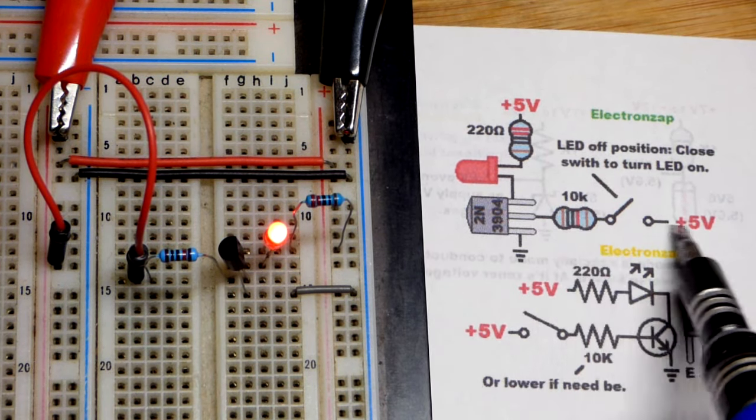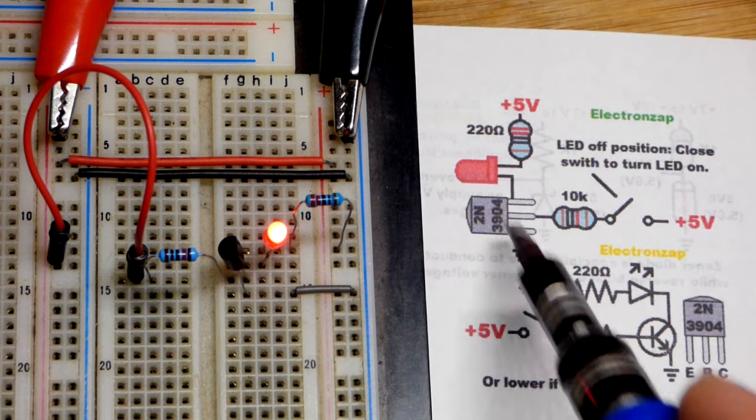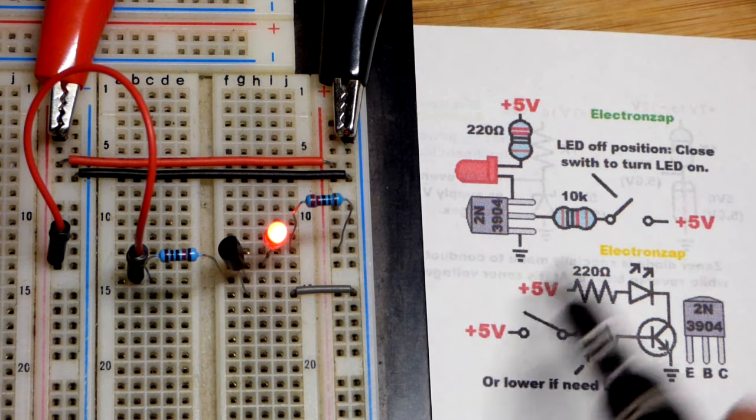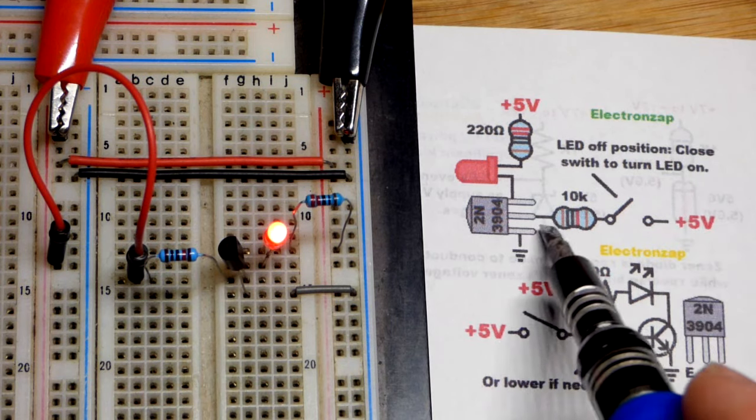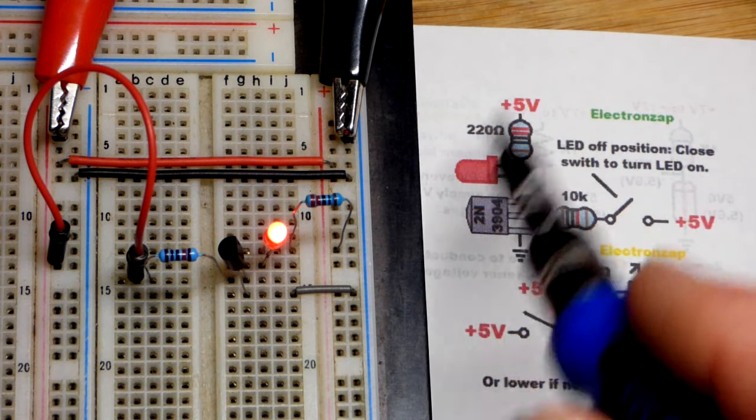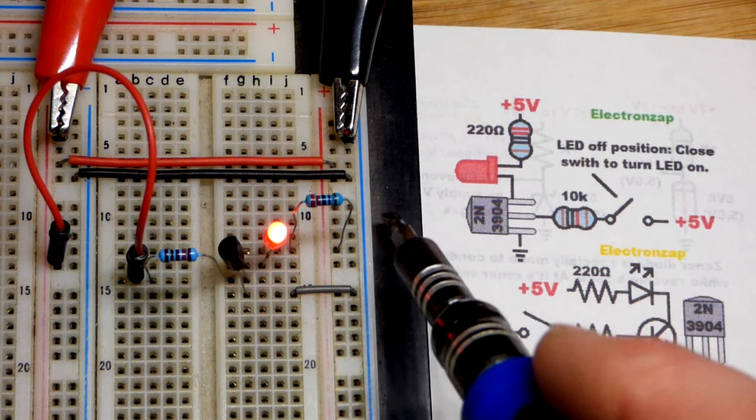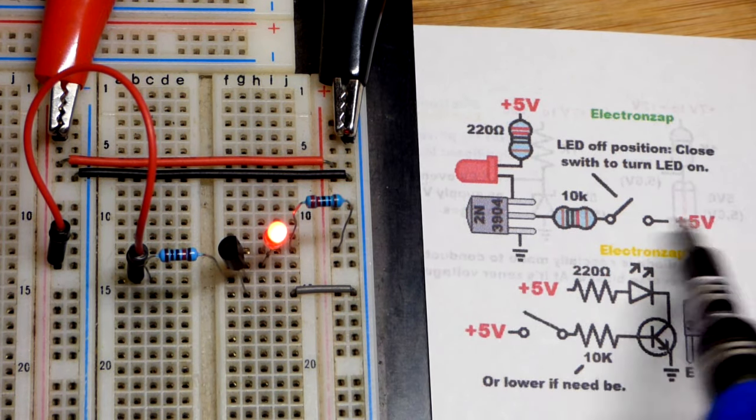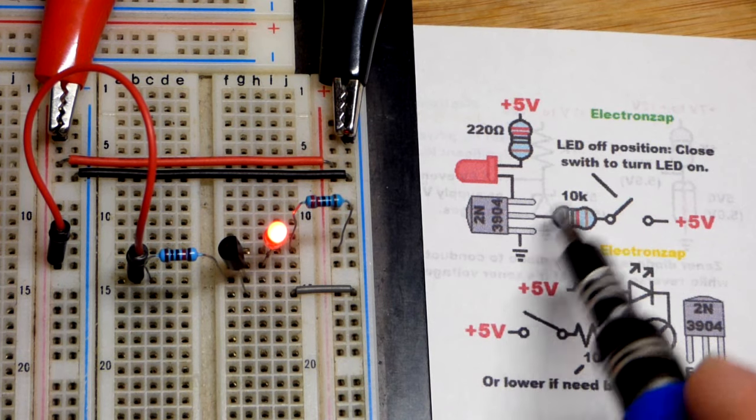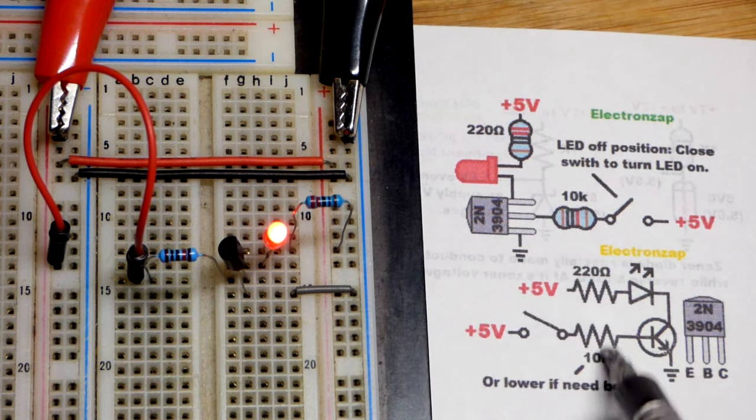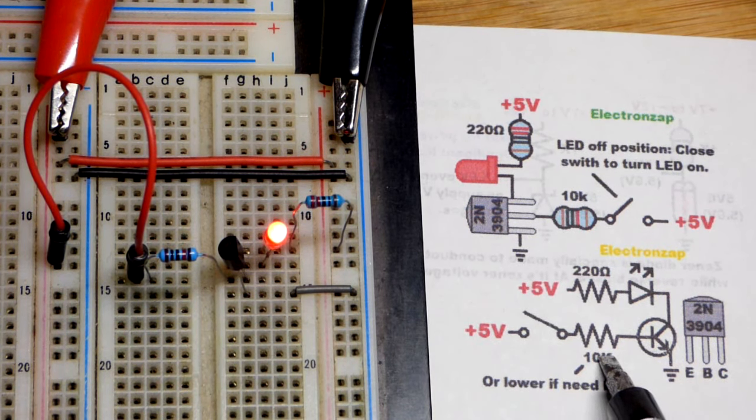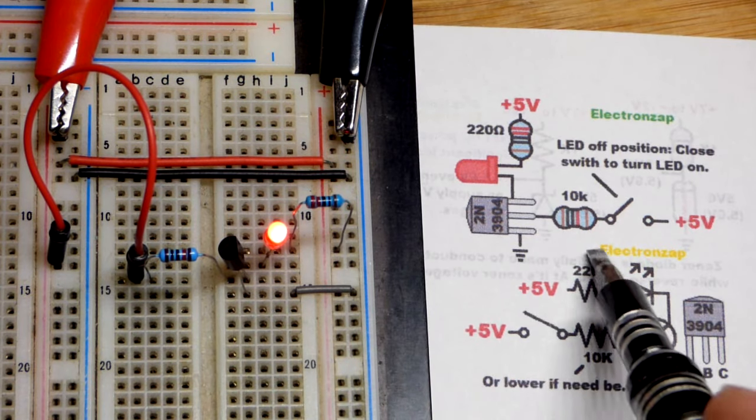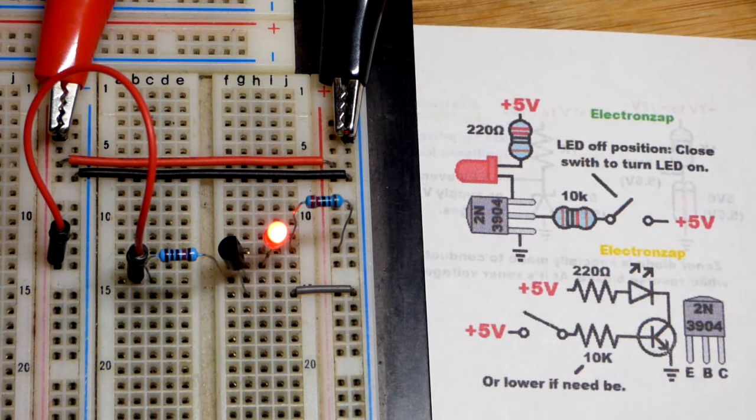10,000 ohm resistor again because we need lower current. Positive is not always to the left on schematics and in this case pictorial. But usually it's either to the top or to the left working your way to the right and down. But not always. Be aware of that. So the drawing is whatever is more convenient for the drawing. Not for helping you set up the circuit. You got to figure that out on your own.